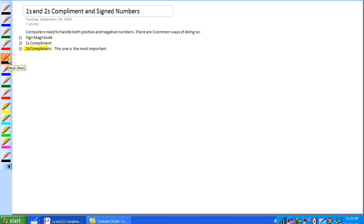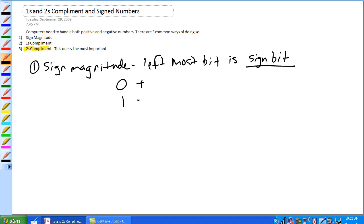Okay, so what is sign magnitude? Sign magnitude - all you do here is the leftmost bit. Zero is positive, one is negative.